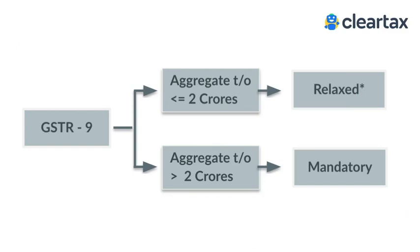There is an exemption for FY 2021: if your turnover is up to 2 crores, GSTR 9 is optional for you. You can still file if you want, but it is optional. Only if your turnover is more than 2 crores are you required to mandatorily file GSTR 9, the annual return. This covers the applicability of GSTR 9.